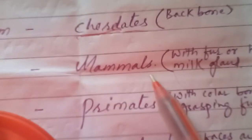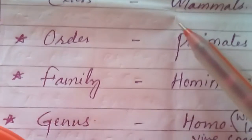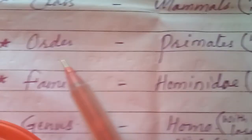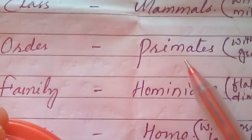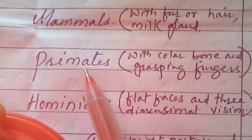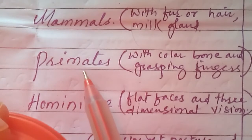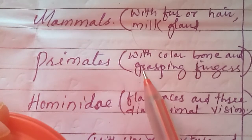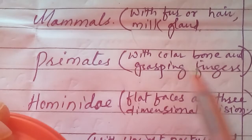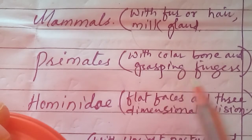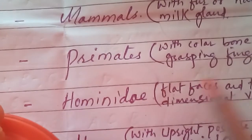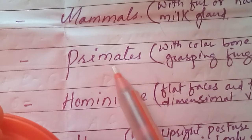Then comes the order. The order of the human being is Primates. Primates are those mammals which have a collar bone and grasping fingers. Organisms having both the collar bone and grasping fingers are known as primates.